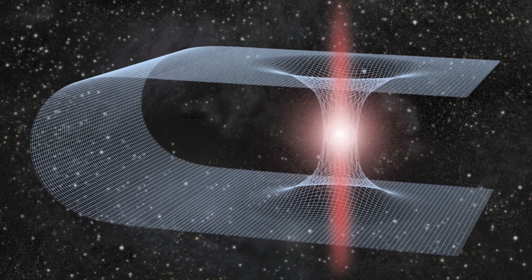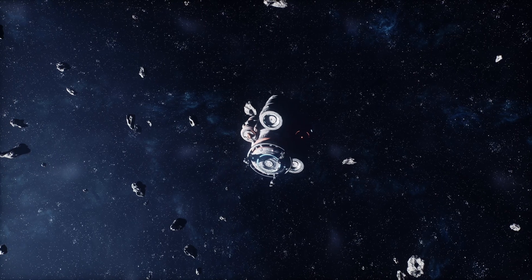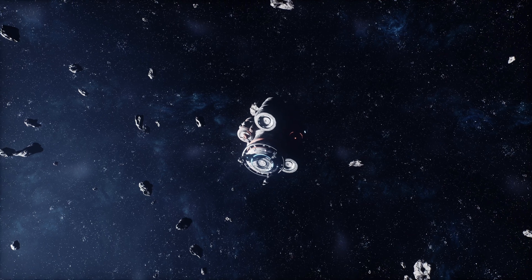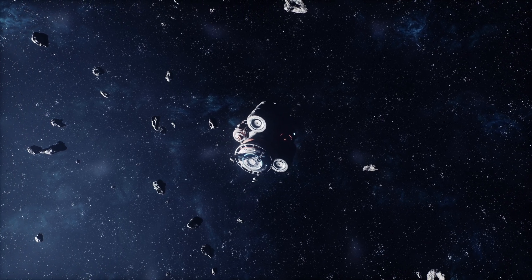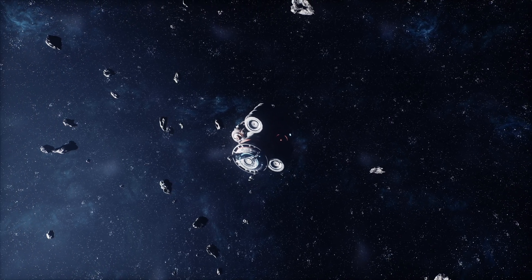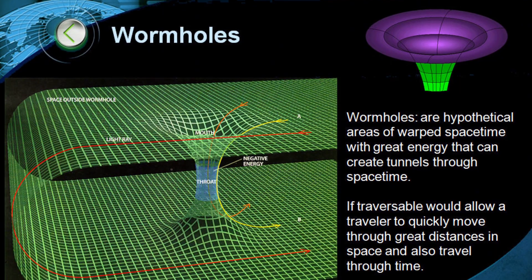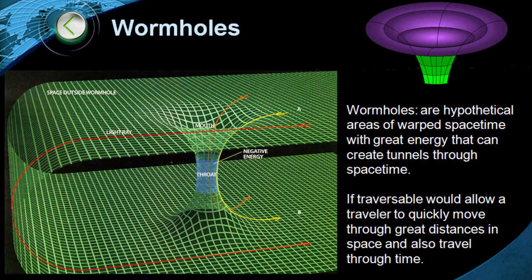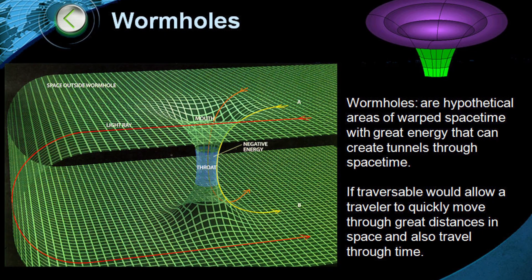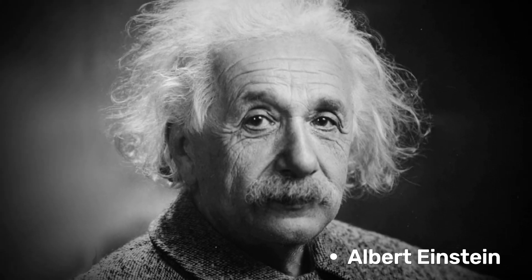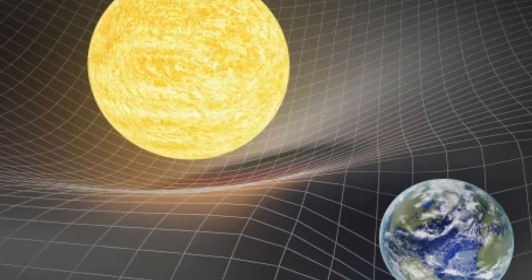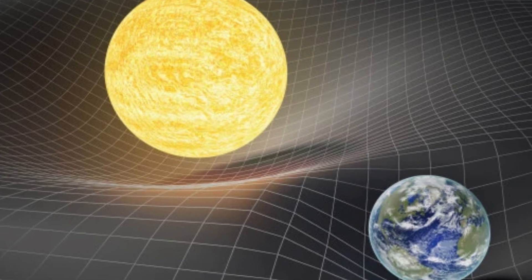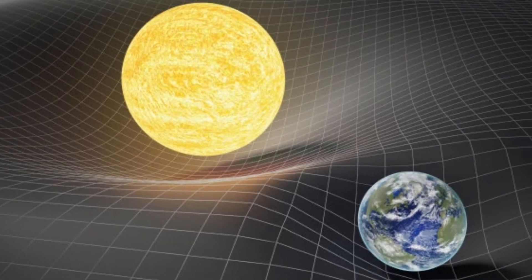Wormholes could create shortcuts for long-distance travel across the universe. The concept arises from solutions to the equations of Albert Einstein's general theory of relativity, which describes how gravity can curve the fabric of spacetime.